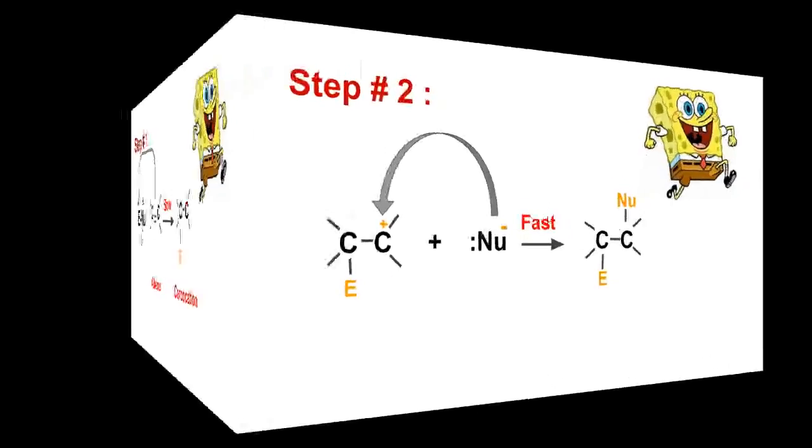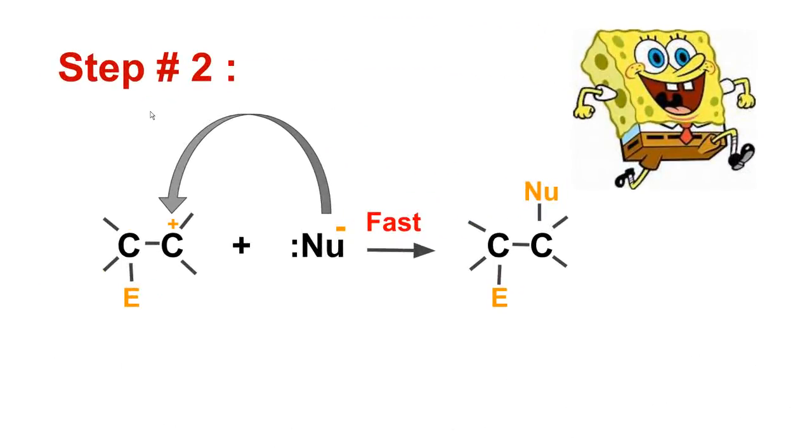In step number two, the nucleophile has lone pair of electrons which are strongly attracted towards the positive carbon. This arrow is indicating as these electrons are strongly attracted towards this positive carbon. These now immediately attack the carbocation to form an addition product. This step is a fast step and in this way, the addition product is formed.